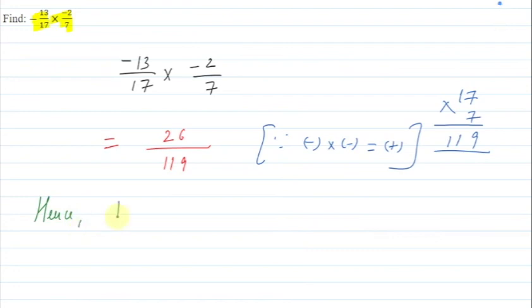So let me write hence the answer is 26 upon 119. I hope you understood the explanation. Thank you.